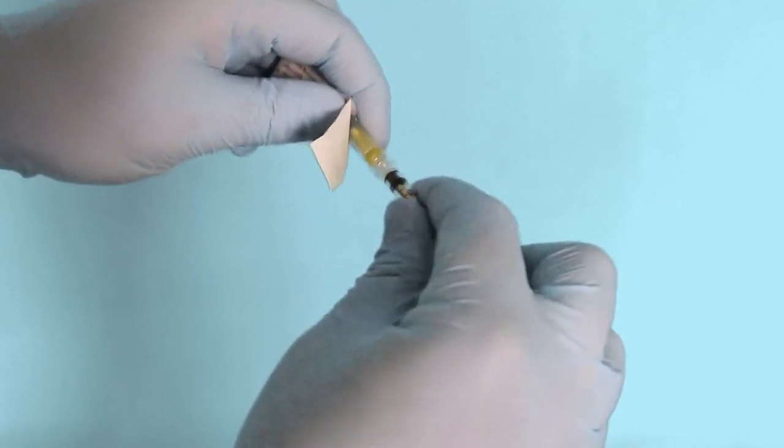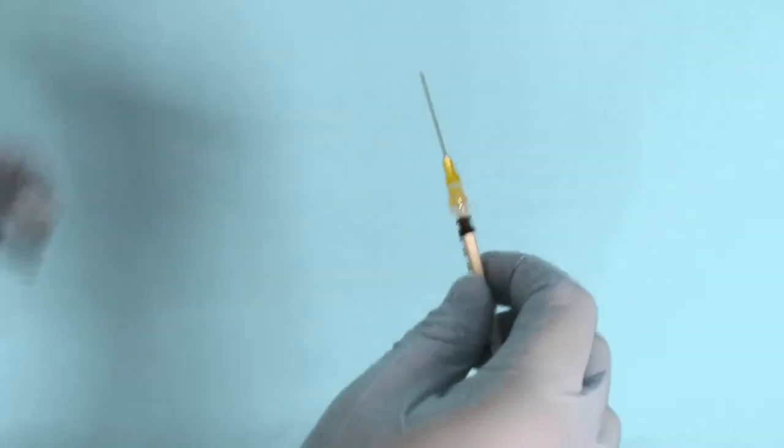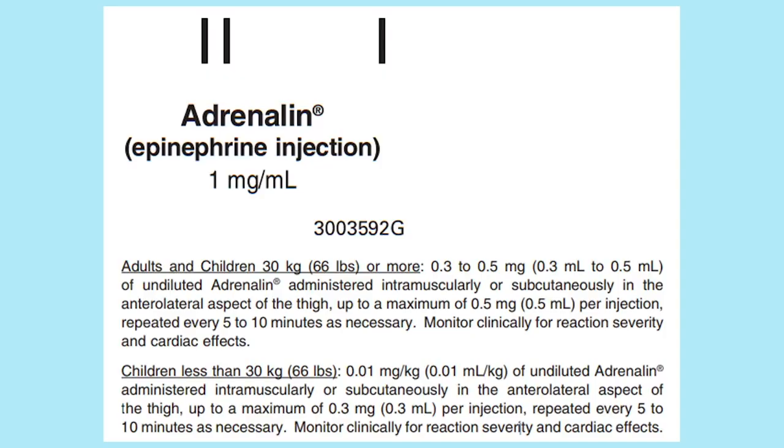The exact amount will depend on the size of dose you intend to inject. According to the package insert for the epinephrine vial, the dose for adults and children 66 pounds or more is 0.3-0.5 mg, which is 0.3-0.5 ml every 5-10 minutes as necessary. The dose for children 66 pounds or less is 0.01 mg per kg, up to 0.3 mg, which is 0.3 ml.